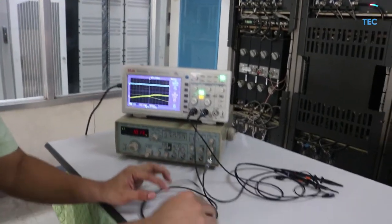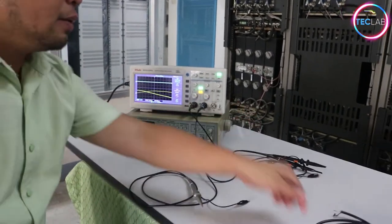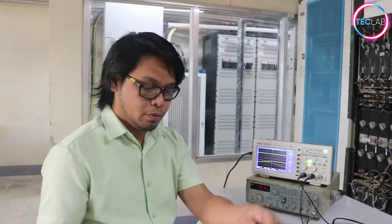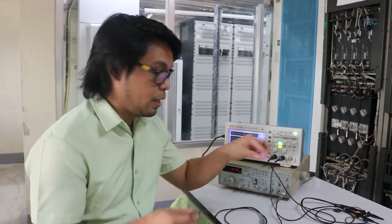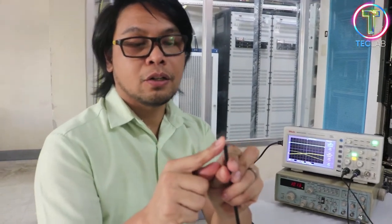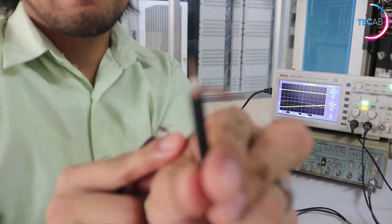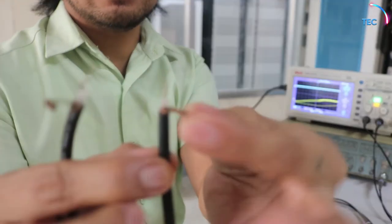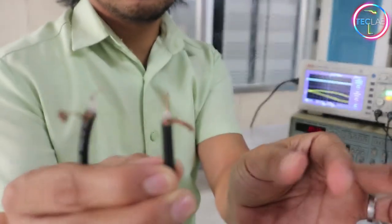and then on our RG58 coaxial, we're going to connect the channel 1 on our ground and on the center conductor. So this is the ground, and this is the center conductor.